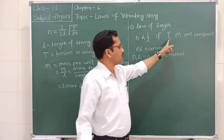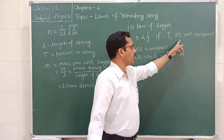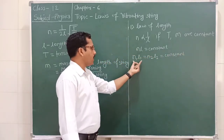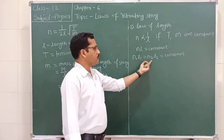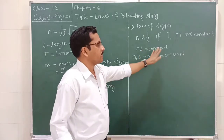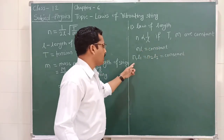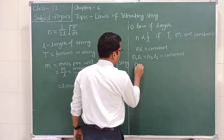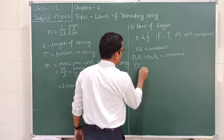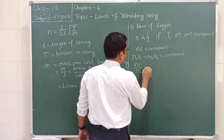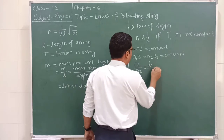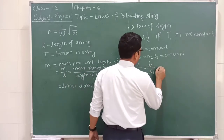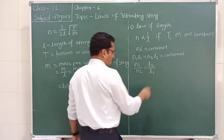If tension and mass per unit length are kept constant, then n·L equals constant, or n1·L1 equals n2·L2, which remains constant. So n1 divided by n2 is equal to L2 divided by L1, and this all remains constant.